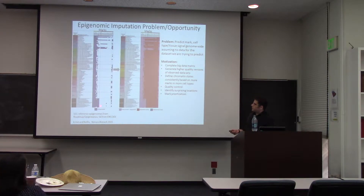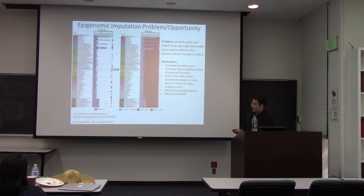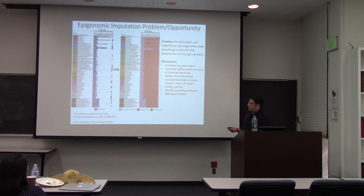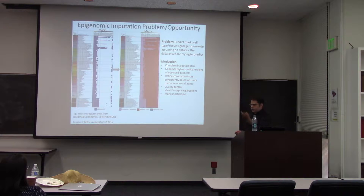Why are we interested in this? The most obvious reason is completing this data matrix. It might not be feasible to do experimentally for several reasons: sometimes you don't have the biological sample material because samples like brain or heart can be very precious, there's a large number of marks to map, and other times the limiting factor is the experimental cost of sequencing or the time involved.